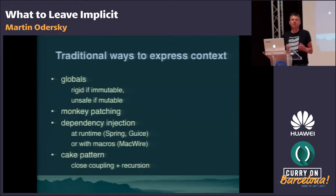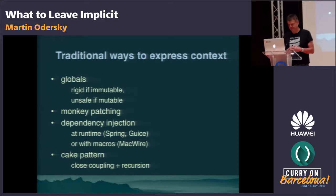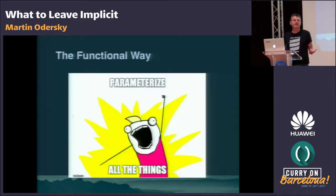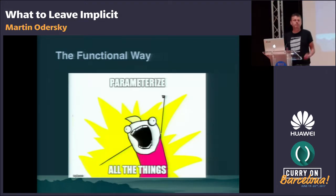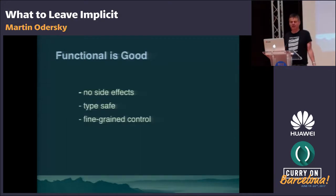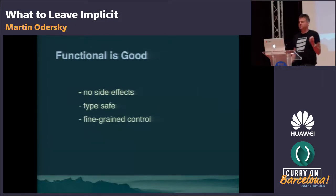So all these things are not ideal. If by now we're all functional programmers — Brian's keynote notwithstanding — the functional way is completely simple: parameterize all the things. If you have a dependency, you make it a parameter. Functional is definitely great: no side effects, type safe, and these parameterizations give you very fine-grained control of what you need to achieve.